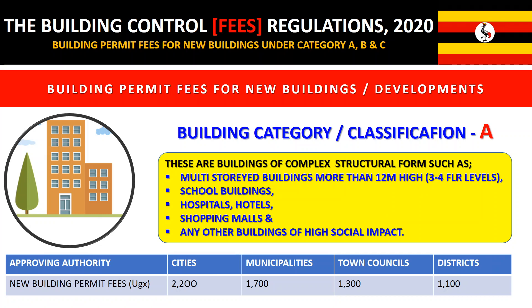Category A, or Classification A, covers buildings of complex structure and form, such as multi-storey buildings more than 12 meters high — that is basically about three to four levels — school buildings, hospitals, hotels, shopping malls, and any other buildings of high social impact to society. Under this category, fees are categorized under municipalities, cities, town councils, and districts.